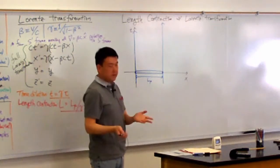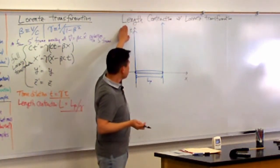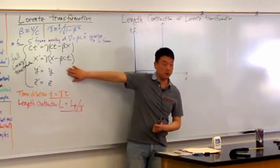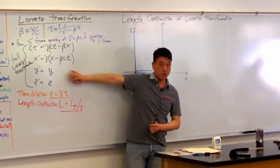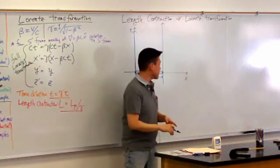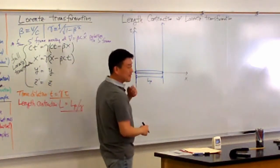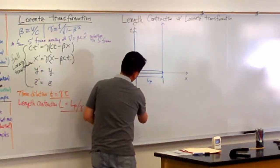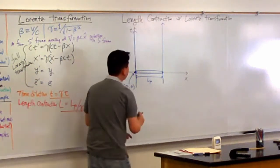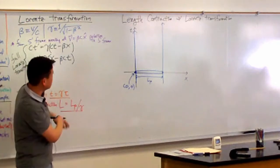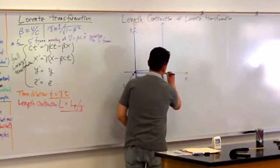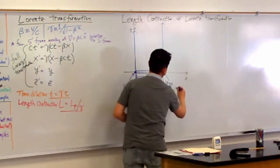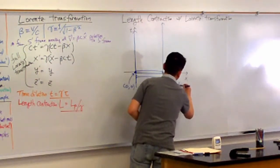Now let's re-derive length contraction using this space-time diagram and the Lorentz transformation. We have the coordinates of one end of the ruler: that's (0, 0). I'm going to ignore the y and z coordinates since nothing interesting happens there. The coordinate of the other point — time is still zero, along this line — and the x-coordinate is the proper length LP.